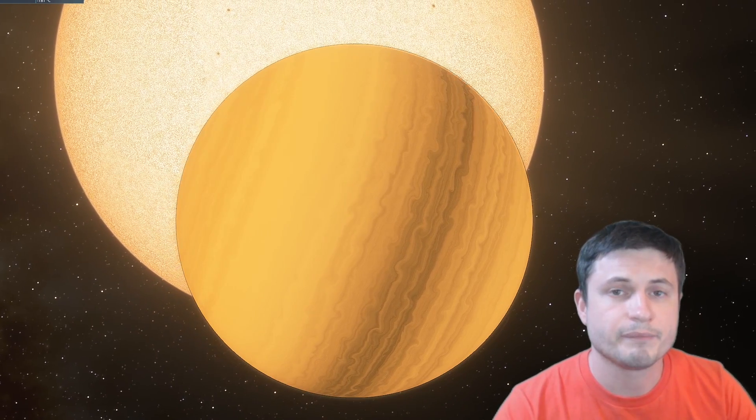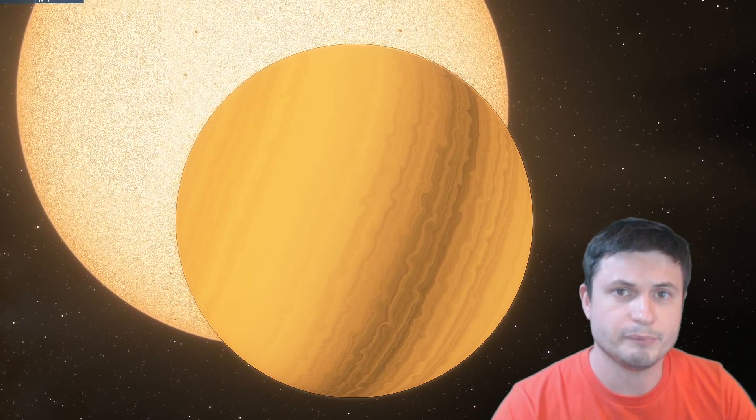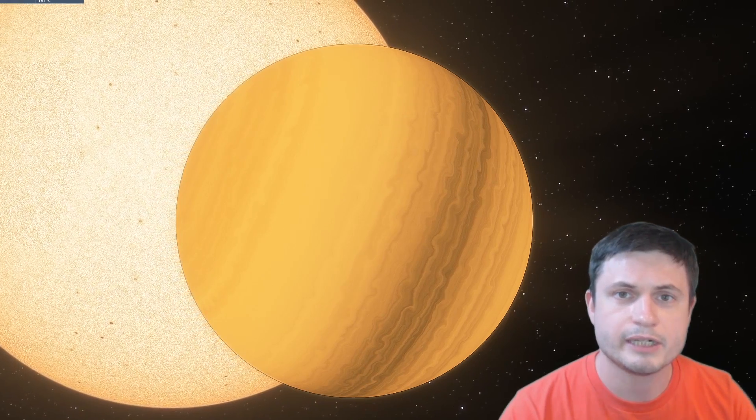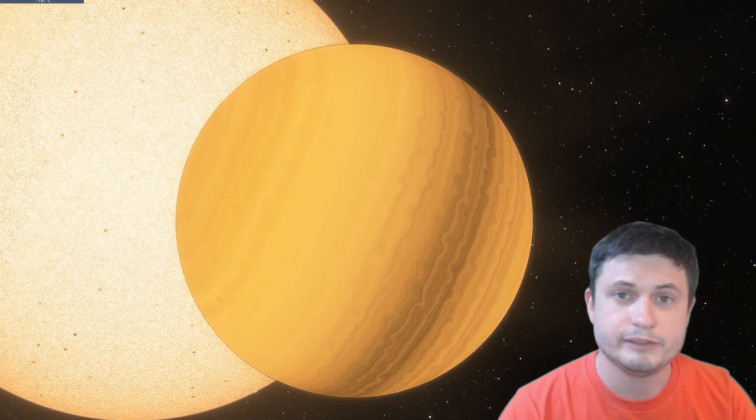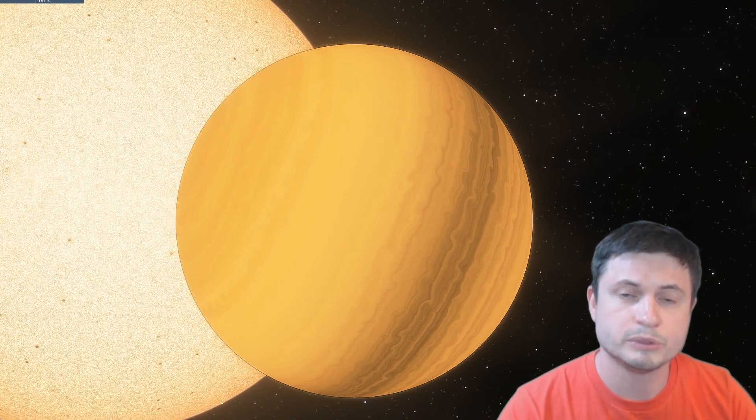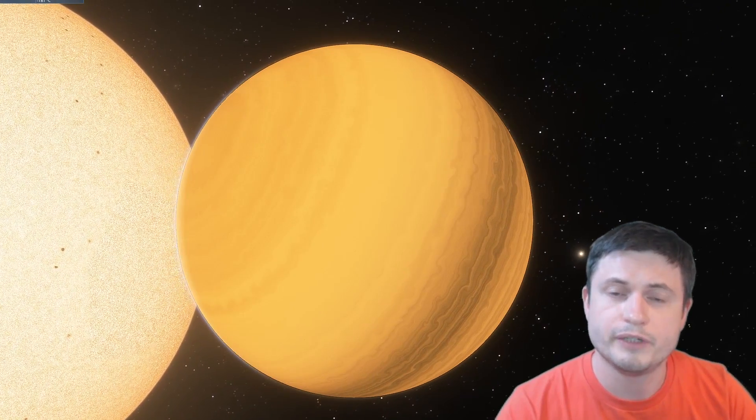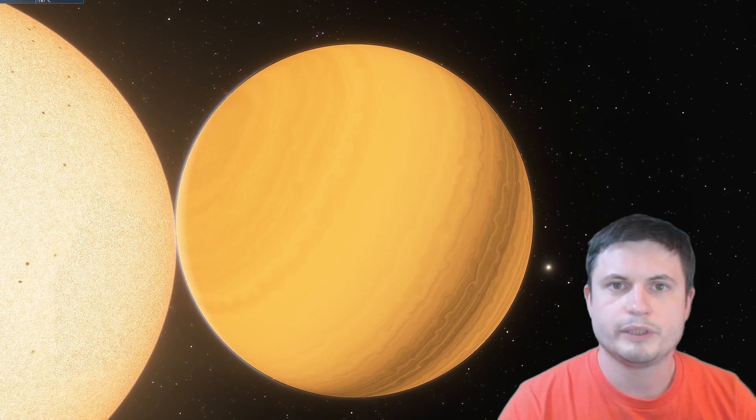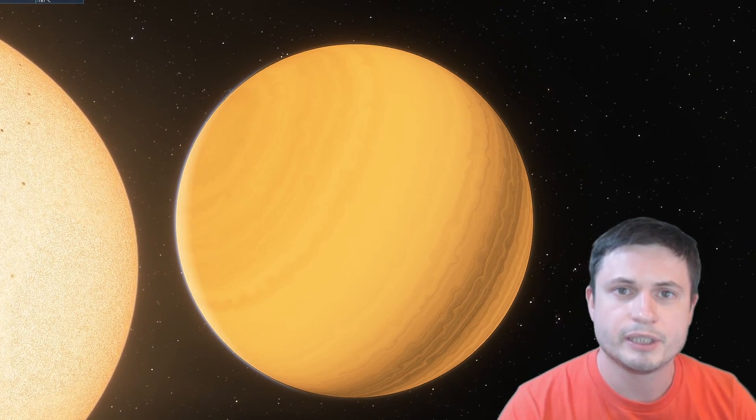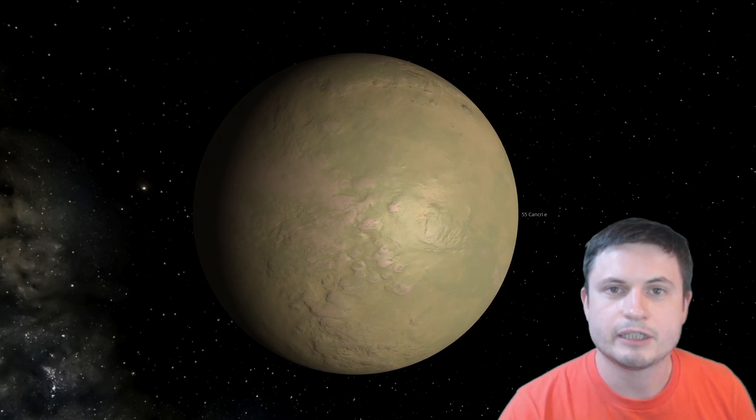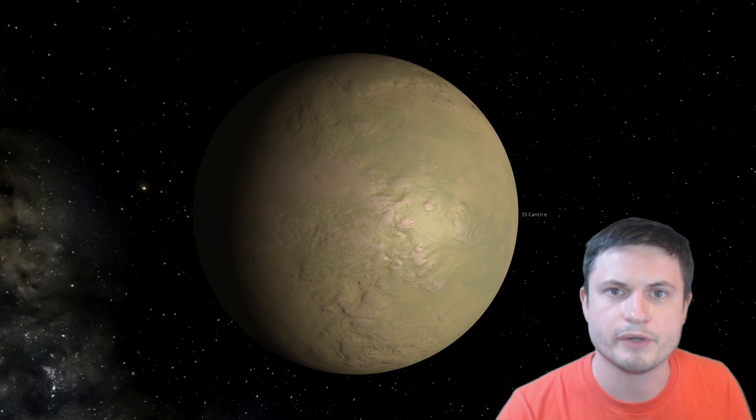The planet which we started with in the beginning of the video is known as 55 Cancri e. Although it has gotten a real name now and it's known as planet Janssen, named after the French astronomer Jules Janssen. And because of the higher levels of carbon here, the scientists do believe that this is probably one of the planets we're going to be discussing in this video. In other words, this is a carbon planet, but it's also very likely a diamond planet, with the ratio of carbon to oxygen being around 78% in total.